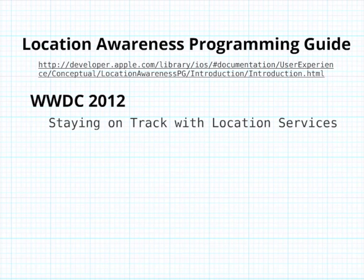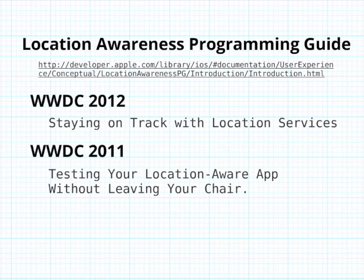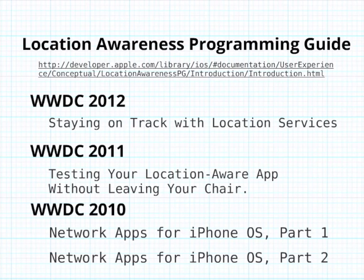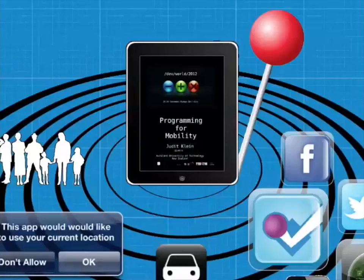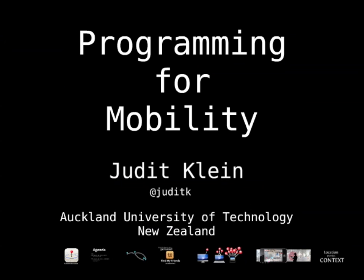There are some resources I found really helpful: the Location Awareness Programming Guide in the documentation library takes you through a lot of the different methods and variables and has some tips. There's the WWDC session from this year, 'Staying on Track with Location Services' — if you have your developer account you can log in and download it, and it talks a lot about the Wi-Fi tiles and new advantages. There's a really good one from last year about testing your location-aware apps without leaving a chair, covering location simulation and localization. And for networking, the Apple engineers recommended 'Network Apps for iPhone OS Part One and Two' — even I, without a lot of experience in networking, found it helpful to get my head around the base concepts. That's me — I'm here through the conference, so come talk to me and enjoy the rest of DevWorld, thank you.